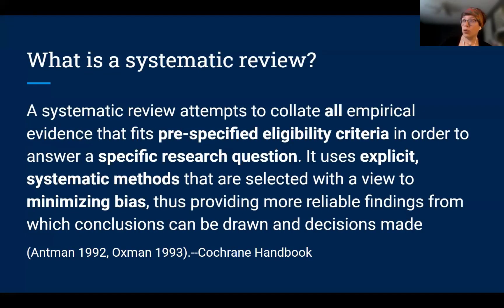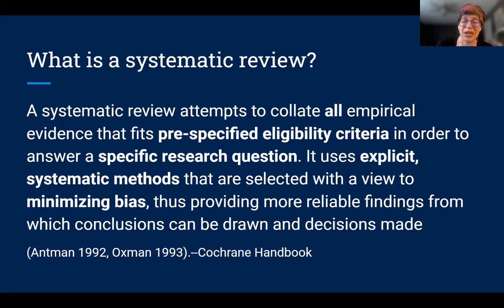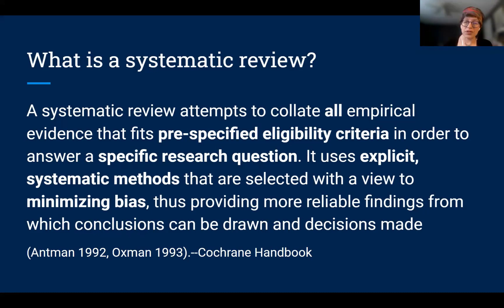Let's start with what a systematic review is. This is a definition from the Cochrane Handbook — they're the ultimate authorities in systematic reviews and have really made the methodology what it is today. A systematic review attempts to collate all empirical evidence that fits pre-specified eligibility criteria in order to answer a specific research question. It uses explicit systematic methods selected to minimize bias, thus providing more reliable findings from which conclusions can be drawn and decisions made.